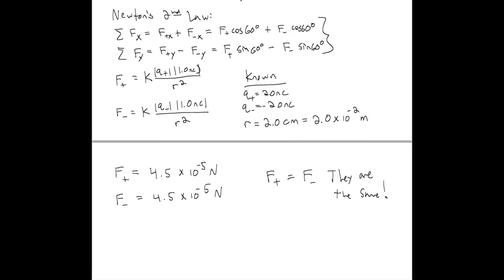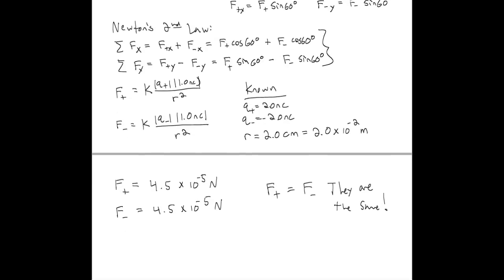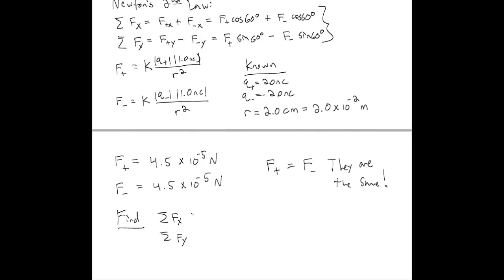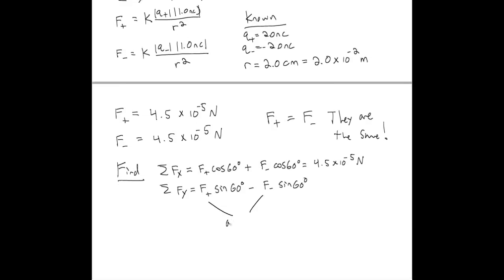Now that we know the magnitudes, let's find the net force. The sum of forces in the X direction is F+ cosine 60° plus F- cosine 60°, which gives us 4.5 × 10⁻⁵ newtons. In the Y direction, Fy is F+ sine 60° minus F- sine 60°. Since F+ and F- are equal, these terms cancel out and we get 0 in the Y direction.